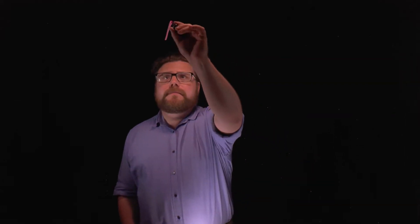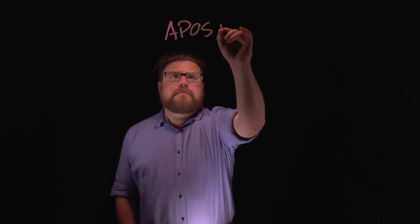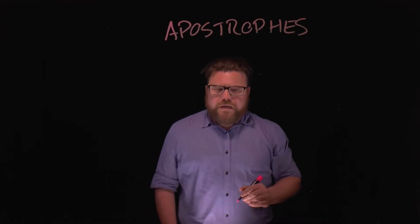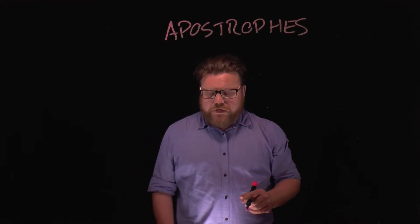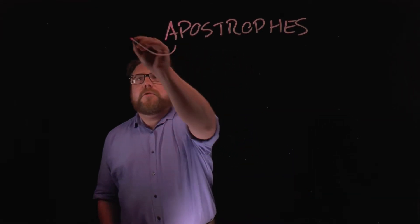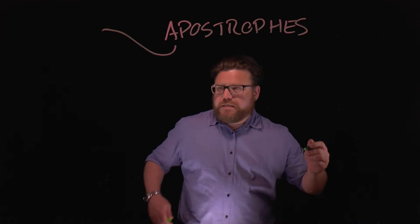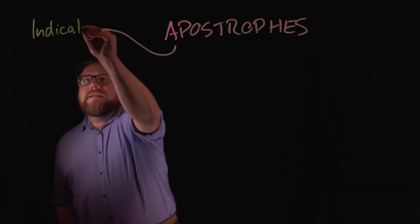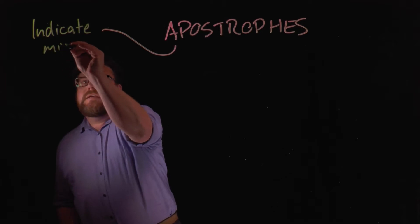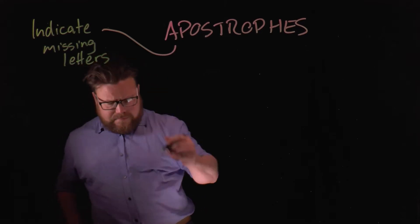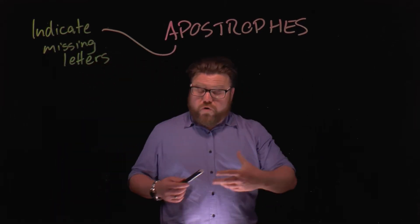Today I want to talk to you briefly about the use of apostrophes. Apostrophes are very useful little punctuation marks that can be used in two ways — they have two purposes. The first purpose of apostrophes is to indicate that there are missing letters, in other words, to shorten words.